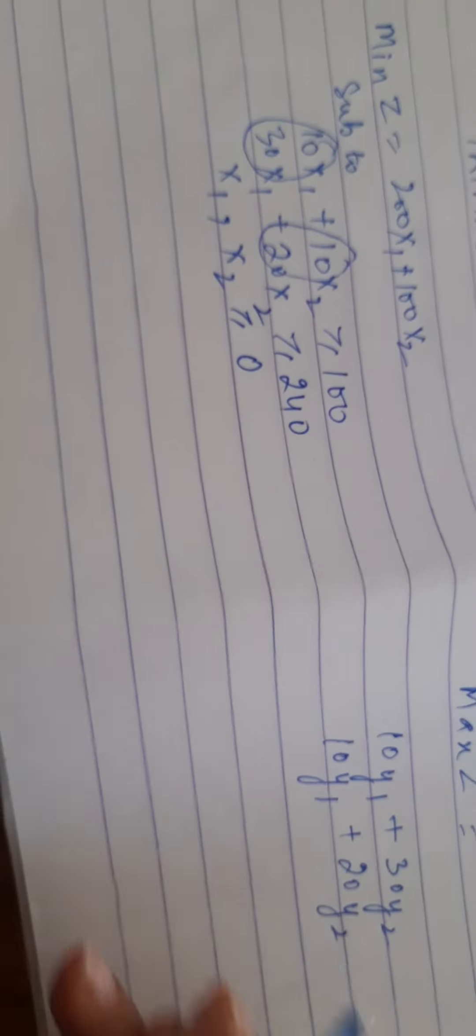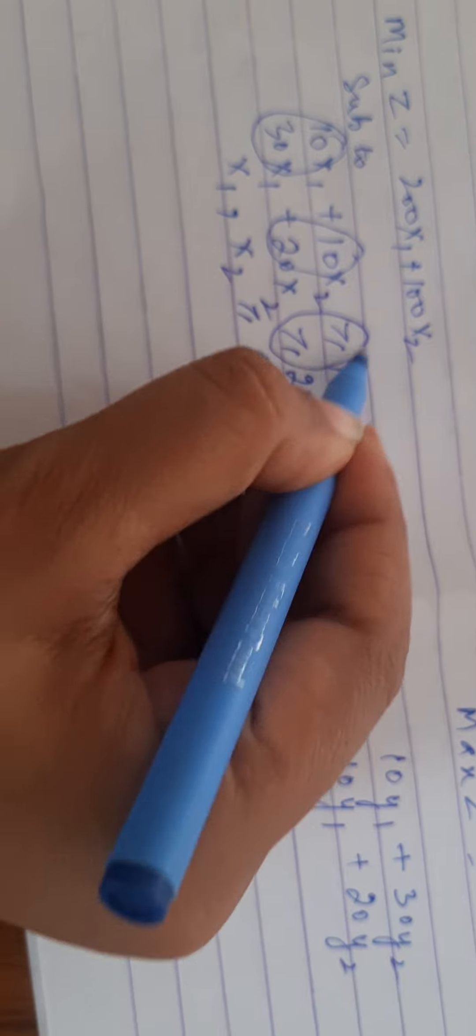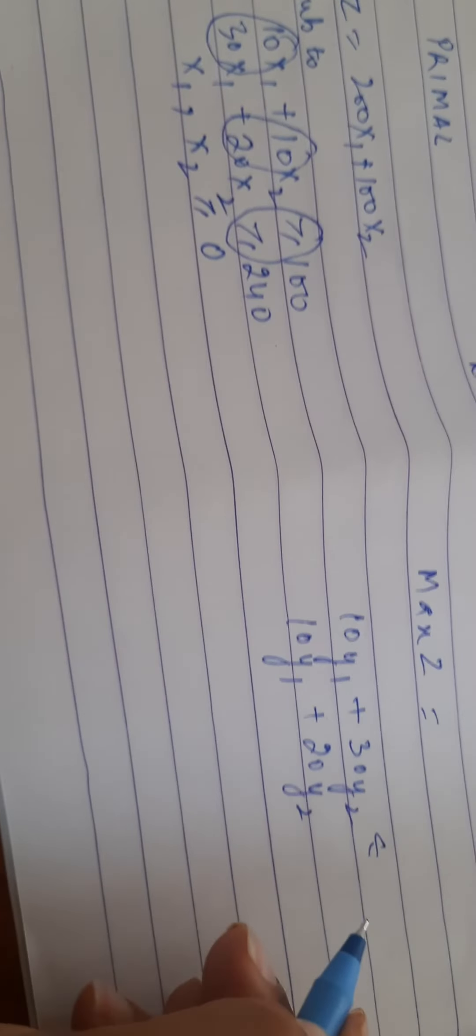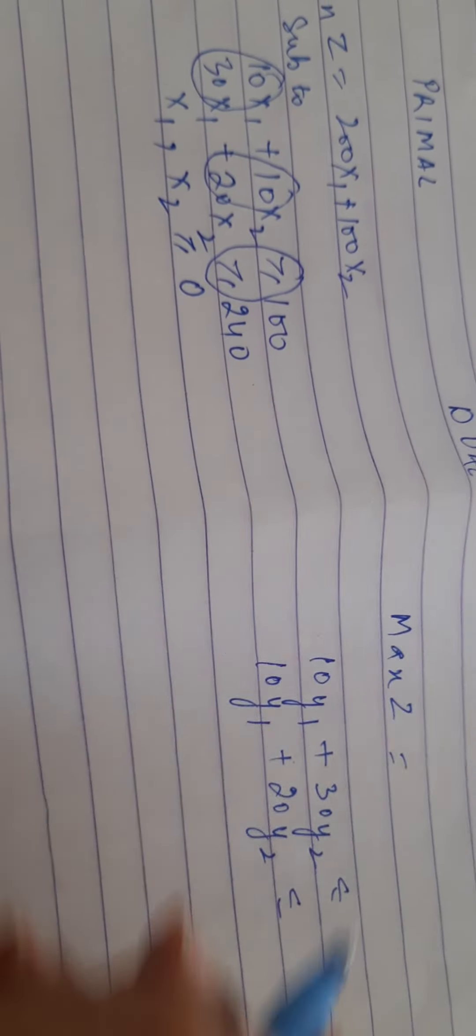10y1 plus 20y2 will be my second constraint. The greater than sign would be changed into less than or equal to sign.